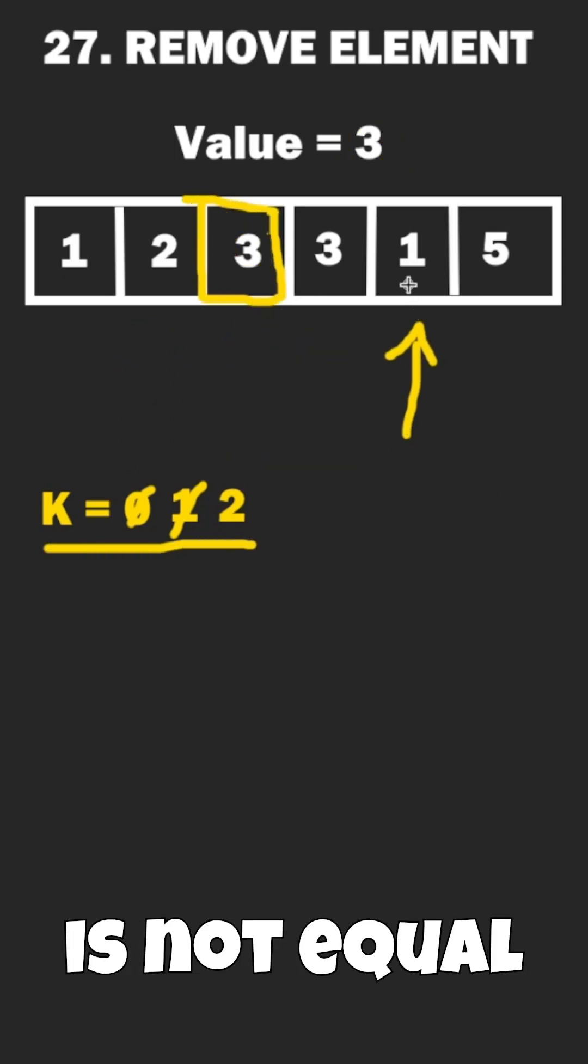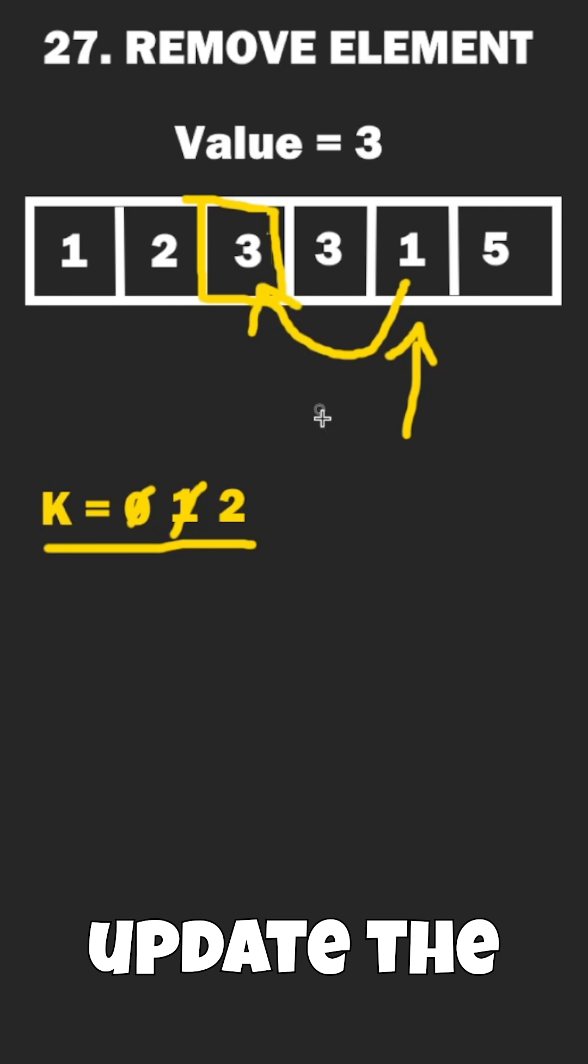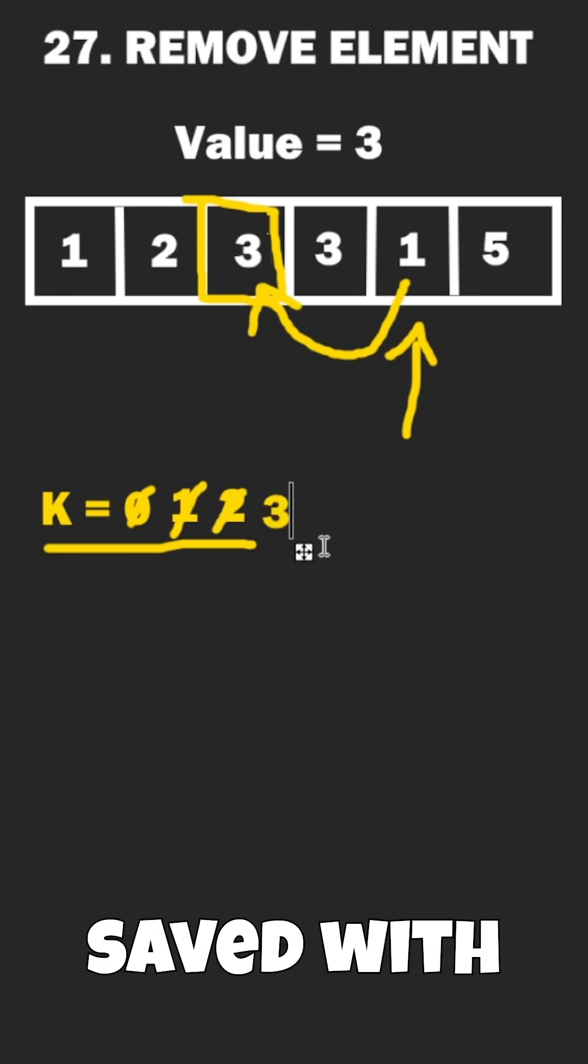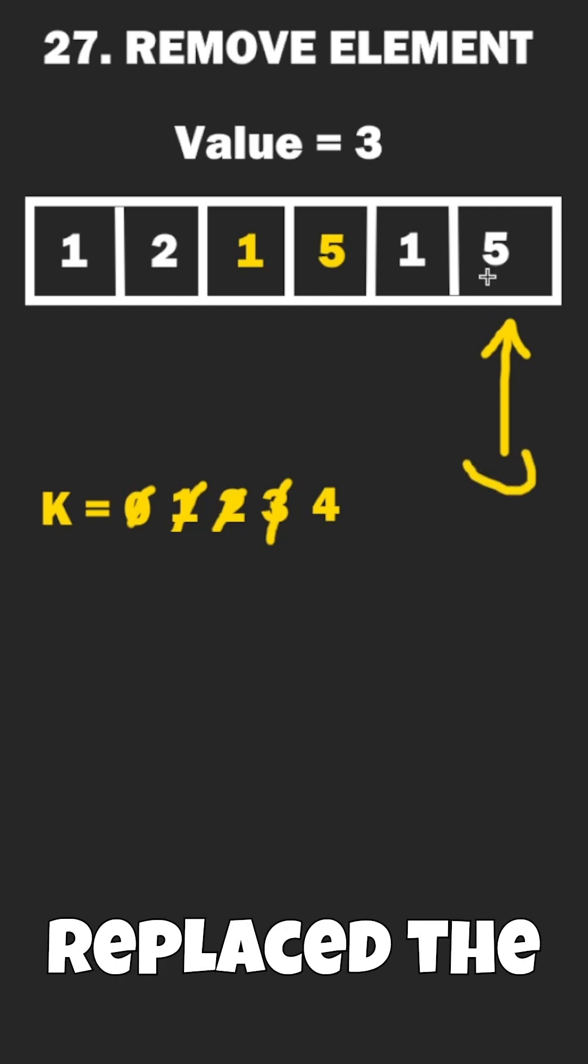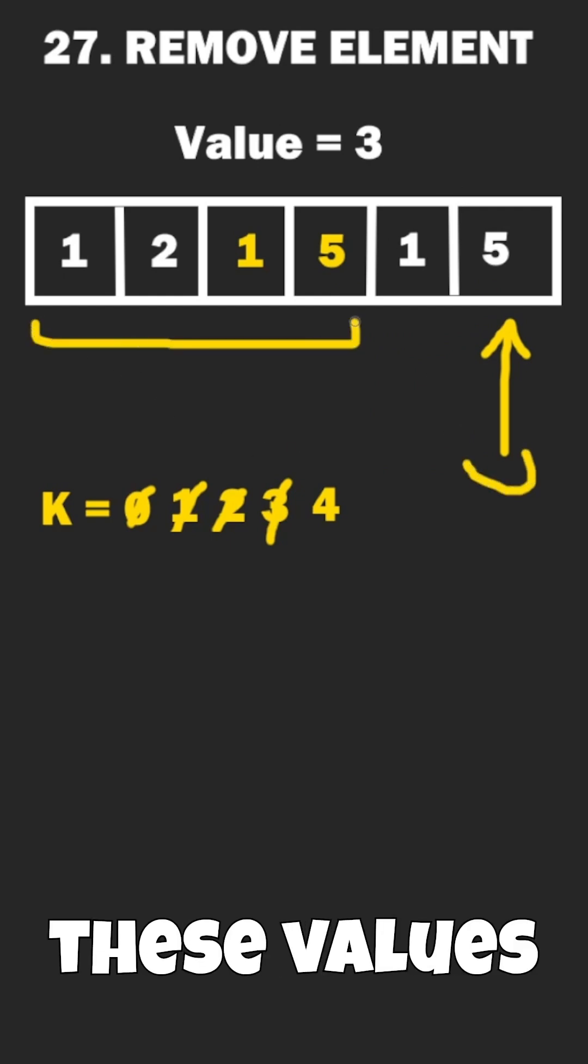When we reach another integer that is not equal to value, we can now update the index of the kth value that we saved with this new value. The same thing will occur for the last integer, and you can see we've replaced the threes in our list with these values that came after.